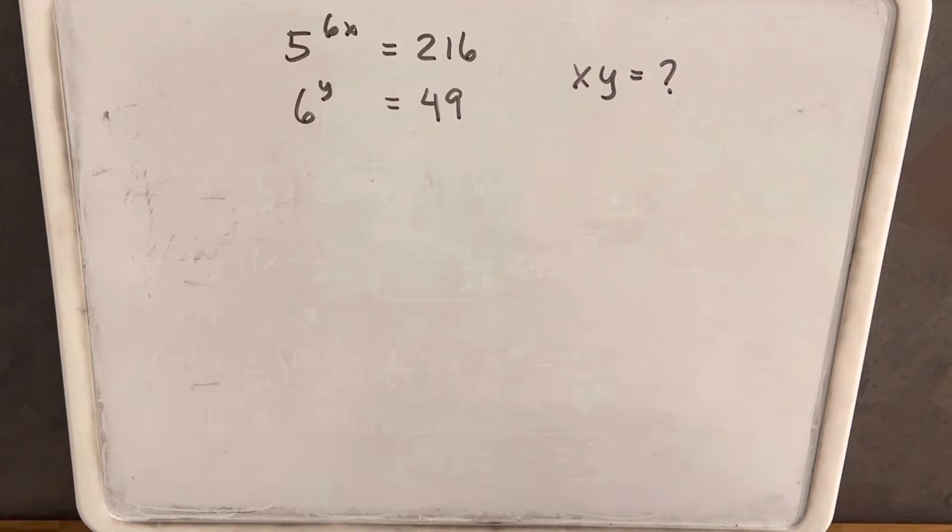We have a system of two exponential equations on the board. We have 5 to the 6x equals 216, and we have 6 to the y equals 49.